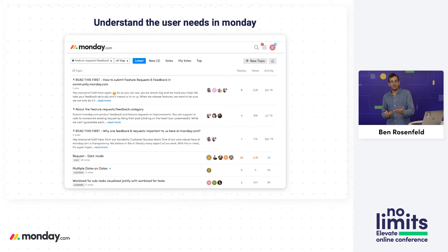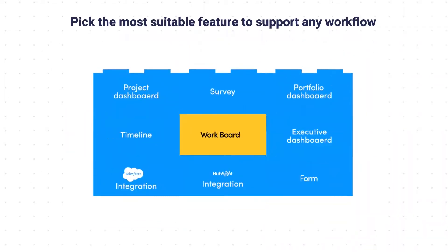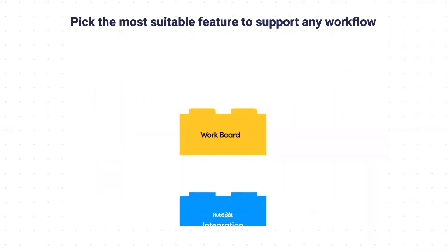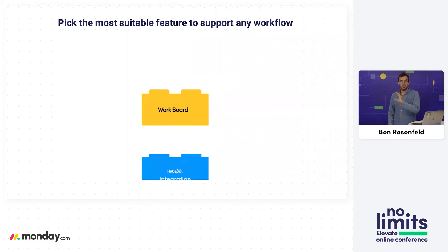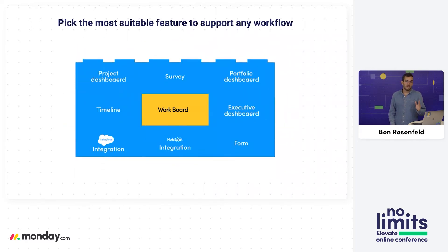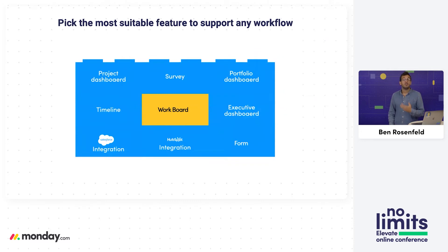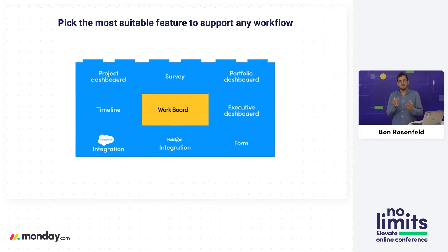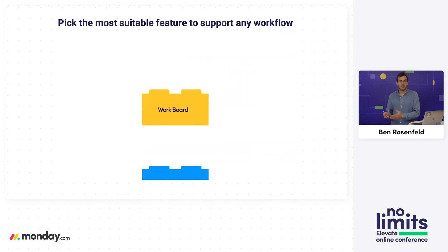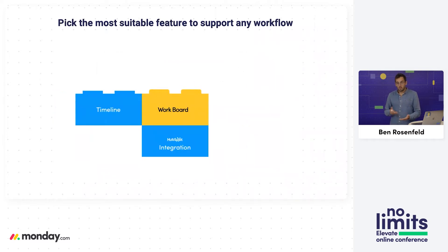Once we're confident we have the impact and reach, this is the time to pick the feature — because we understand what we're trying to solve and how people are using Monday. In our use case, we could pick an automation or an integration, but we wanted a feature exposed to all users that is visual, so we picked a board view. We picked a board view over a dashboard widget because software development teams manage sprint planning in one board, making it easier to set up.